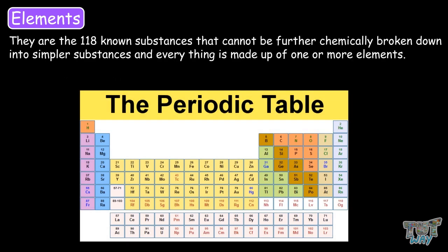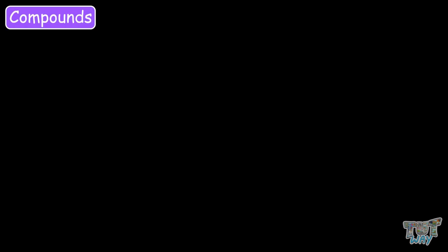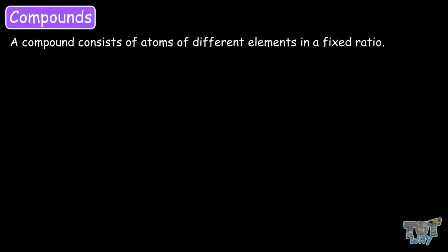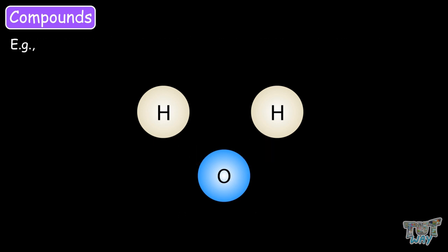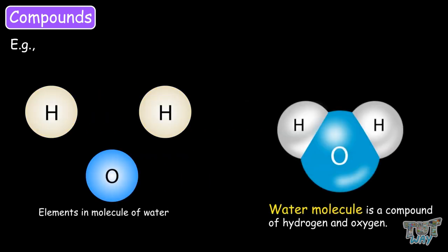There are 118 known substances that cannot be further broken down chemically into simpler substances, and everything is made up of one or more elements. Now let's learn about compounds. Compounds consist of atoms of different elements in a fixed ratio. For example, oxygen and hydrogen are elements, and water is a compound of hydrogen and oxygen.